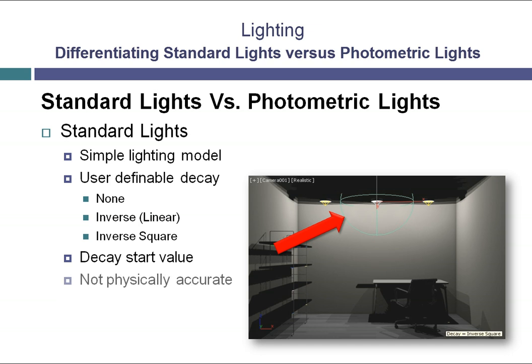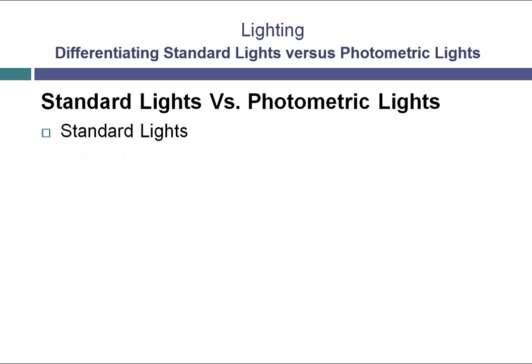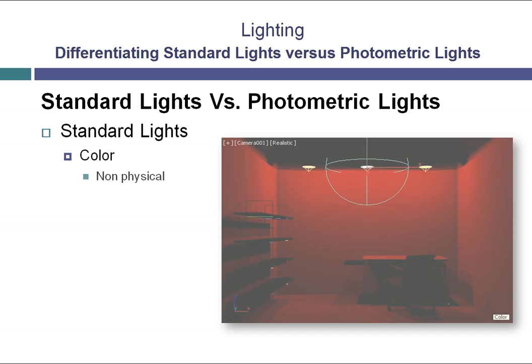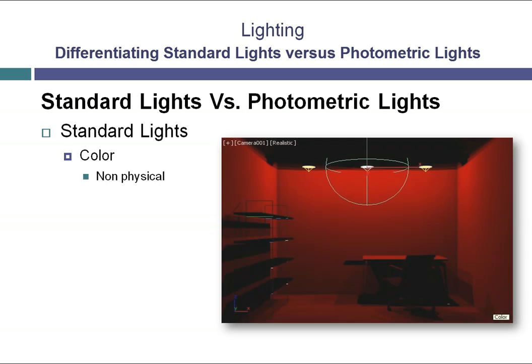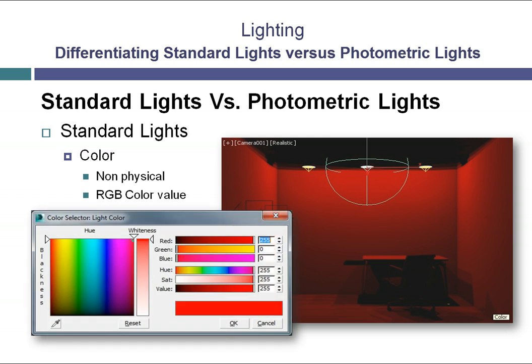Another reason these lights are so flexible is because you can define the decay start value. This allows you to make an artistic judgment call and set the light to work the way you want it to. Remember, standard lights are not physically accurate, so if you are trying to simulate real-world lighting, these may not be the lights you want to start with. When it comes to the color of standard lights, the color is based on a non-physical value — you set an RGB color value. This can be any color you want, effectively used to simulate real lights or give you the artistic freedom to make a light that works the way you want it to.